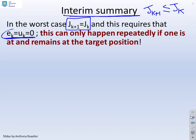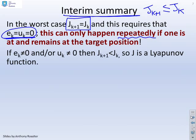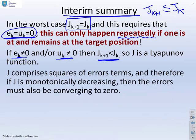Now, if both e and u are 0, that can only happen repeatedly if you're already at the desired steady state with a 0 input. If e is not equal to 0 and/or u is not equal to 0, then the inequality holds strictly. J_{k+1} must be less than J_k. And so therefore, J must be a Lyapunov function.